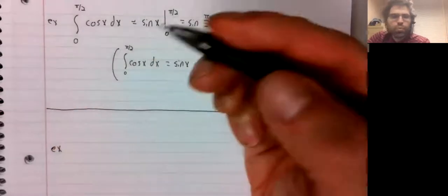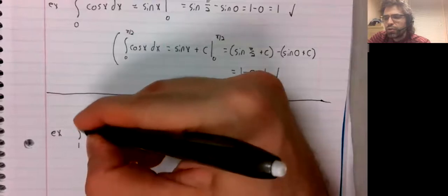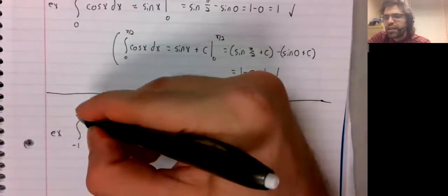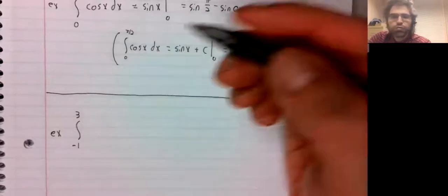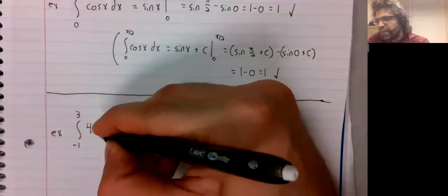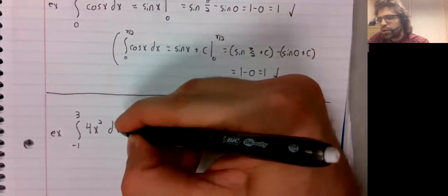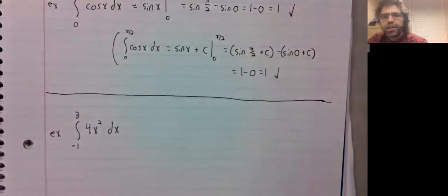Example two. The integral from negative one to three of 4x squared dx.